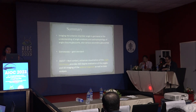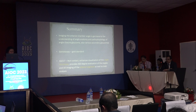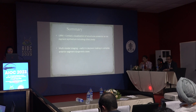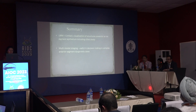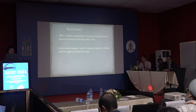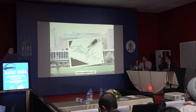In conclusion, imaging the anterior chamber angle is germane to understanding angle anatomy and the pathophysiology of various glaucomas. Gonioscopy is the gold standard. ASOCT, being non-contact and rapid, enhances visualization of angle structures and provides 360-degree angle visualization. UBM is a contact procedure used to visualize structures posterior to the iris pigment epithelium, including the ciliary body. Multimodal imaging is useful in decision-making in complex anterior segment cases.